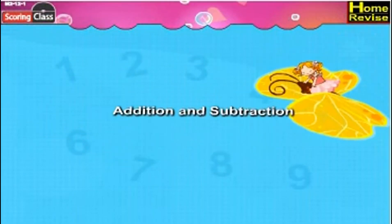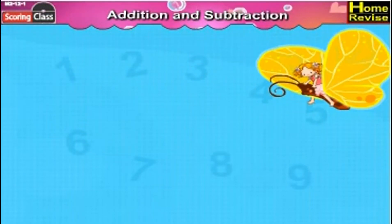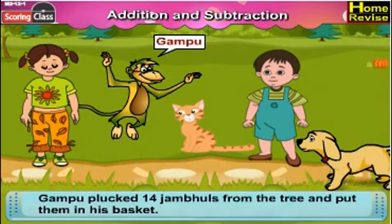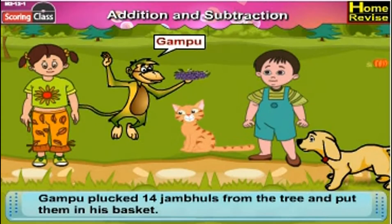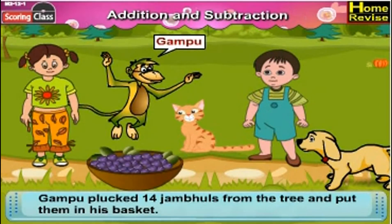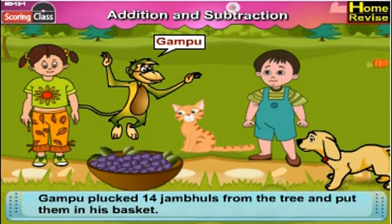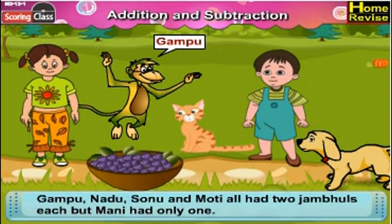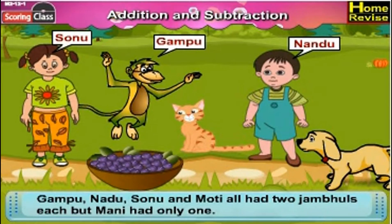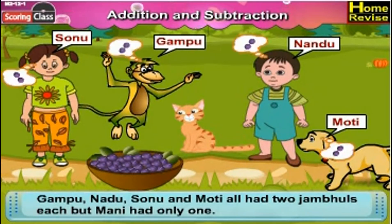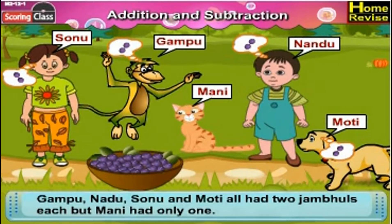Addition and subtraction. Gumpu plucked 14 jambus from the tree and put them in his basket. Gumpu, Nandu, Sonu, and Moti all had 2 jambus each, but Moni had only one.